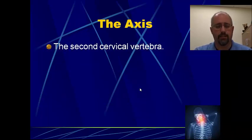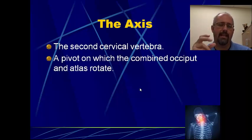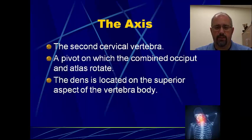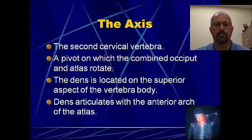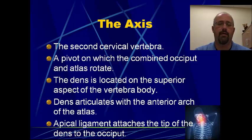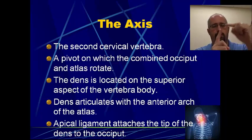The second cervical vertebrae is the axis, sitting right on top of the atlas. The axis, as the name suggests, is where a lot of rotation occurs — it's basically a pivot point on which the occiput and the atlas rotate, and they rotate around that odontoid peg. The dens or odontoid process is sitting right on the superior aspect of the vertebral body, and it has this upward projection that articulates with the anterior arch of the atlas. The transverse ligament and the apical ligament are the two ligaments that form that cross shape — the transverse coming across to hold it, and the apical ligament attaching from the tip of the dens up to the occiput. So the dens is held tight against the anterior arch by the transverse ligament, and it's held up to the occiput through the apical ligament.